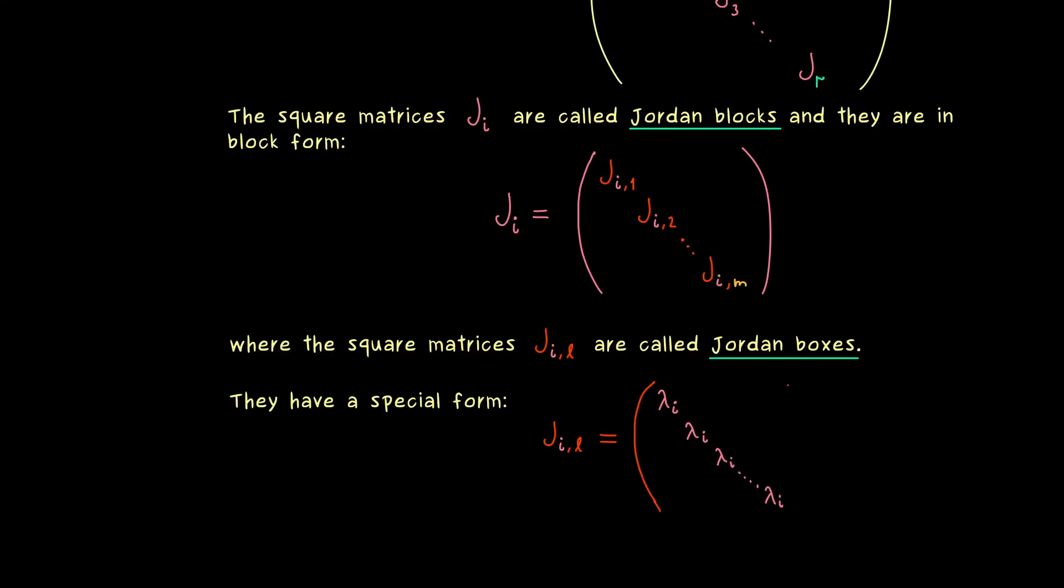So the main diagonal here is occupied and we also have something above it. Indeed exactly on the next diagonal we find 1s. Hence above each lambda there is a 1 with the exception of the first one.